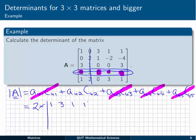And that's still a big matrix. It's got 1, 3, 1, 1, 0, 1, minus 2, minus 4, 3, 0, 0, 3, and finally 1, 0, 3, 1. So that's a 4 by 4 matrix.